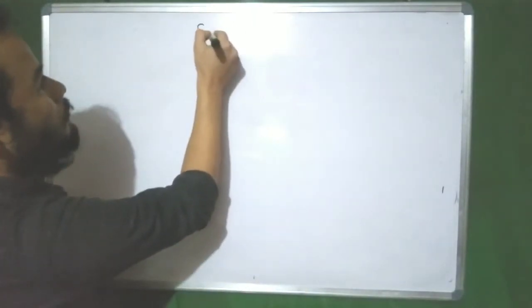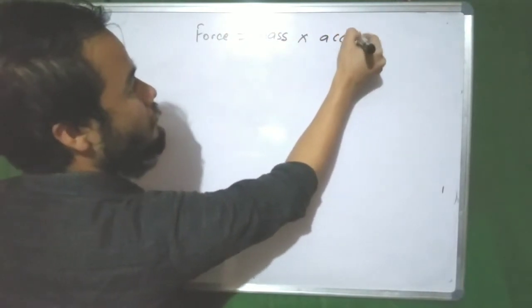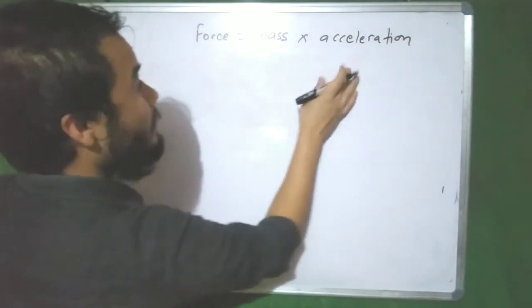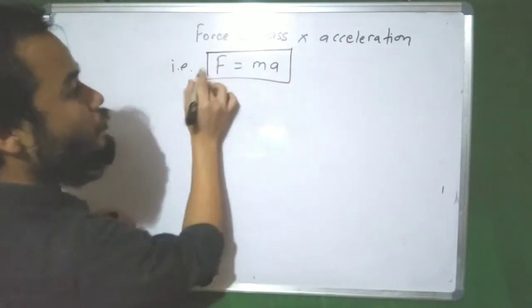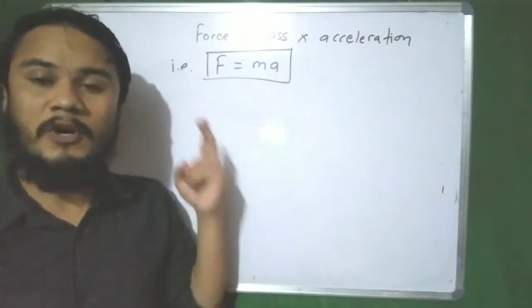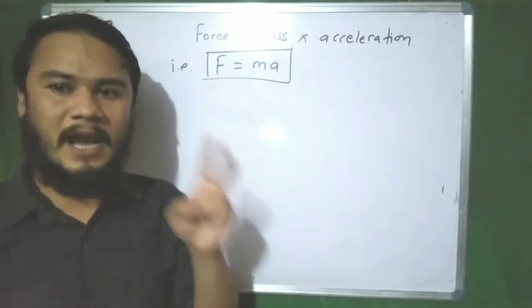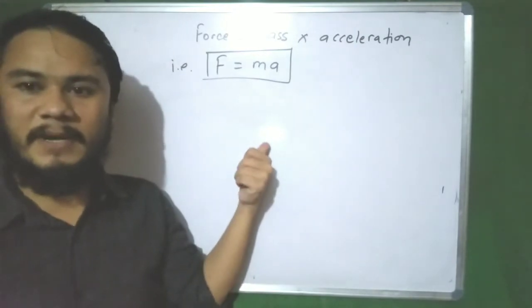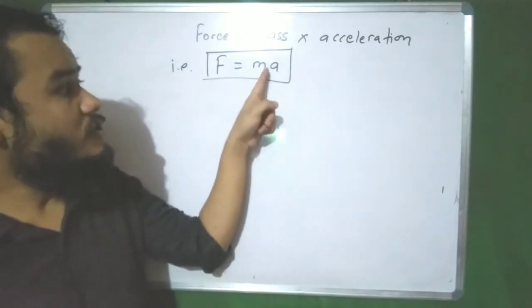We have two methods to prove force is equal to ma. The first method is the momentum method. As I have already mentioned, we have two methods to prove force is equal to ma from Newton's second law of motion. Newton's second law of motion gives us the relation: force is equal to mass times acceleration.